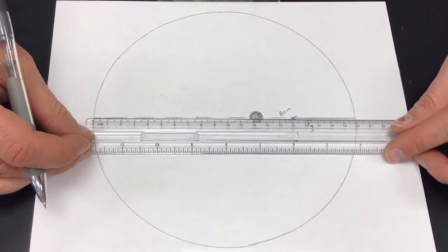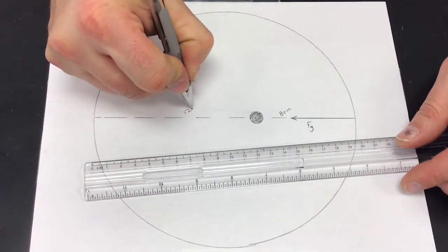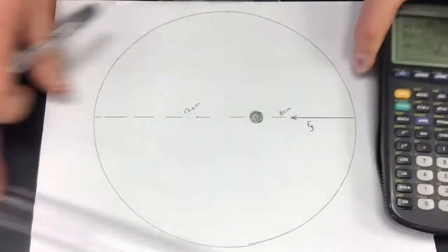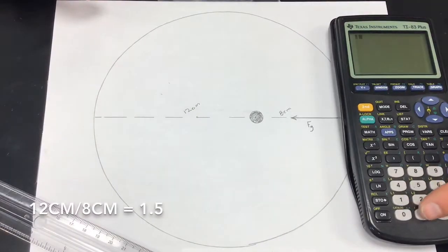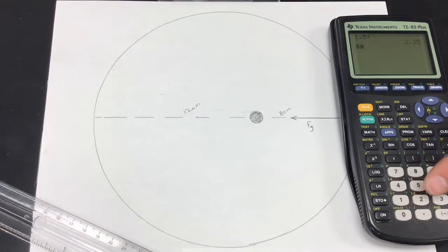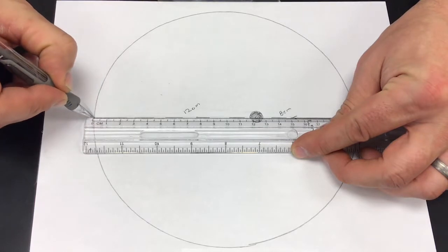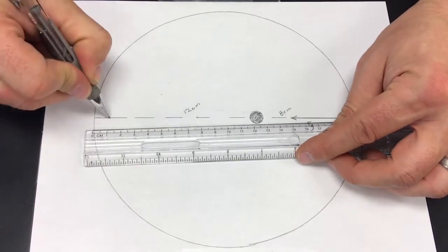Now that thing is eight centimeters away, center to center, and then the other one's twelve centimeters away. So I can use that. Gravitational force is inversely proportional to the square of the distance between the two objects and do a calculation. 1.5 squared and five divided by 1.5 squared gives you two. Okay, so the gravitational force at that new position, twelve centimeters versus eight centimeters.